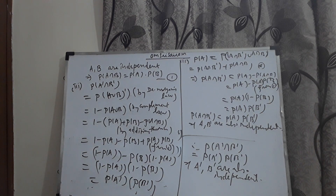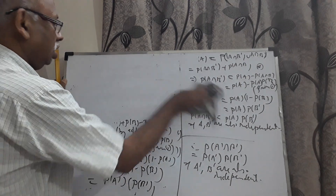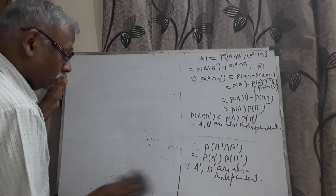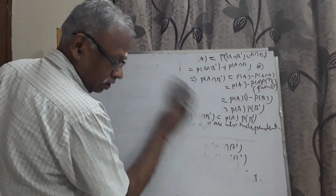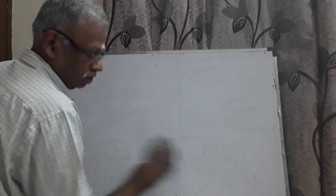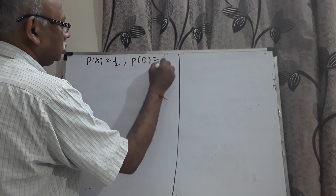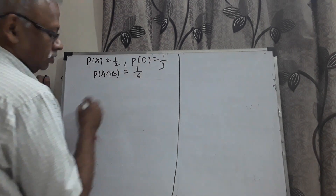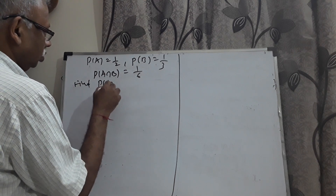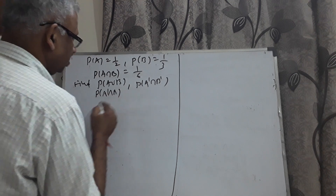Now let me take one more problem on probability. The question given is: P(A) = 1/2, P(B) = 1/3, P(A∩B) = 1/6. Find P(A∪B), P(A'∩B'), P(A'∩B), and P(A∩B').